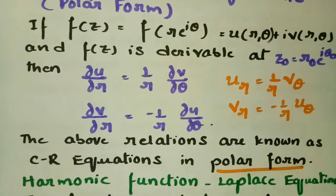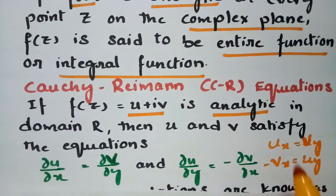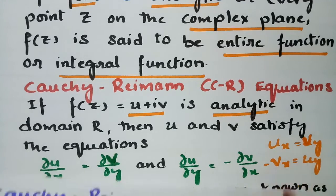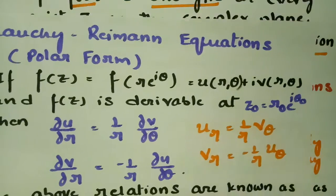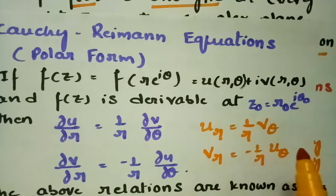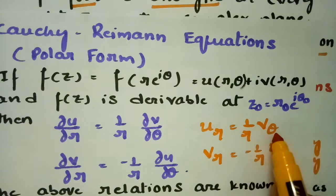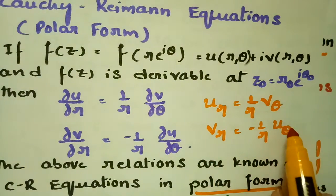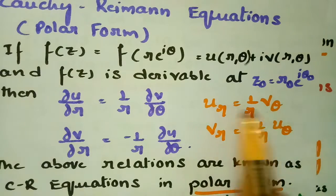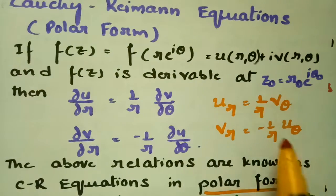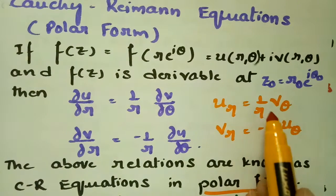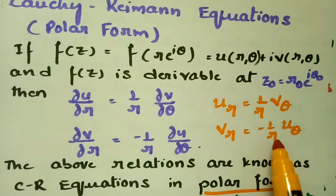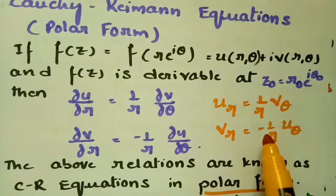There is a slight difference here. In Cartesian form: u_x = v_y and u_y = −v_x. In polar form: u_r = (1/r)·v_θ and v_r = −(1/r)·u_θ. So in polar form, r and θ appear — specifically the factor of 1/r — and the minus sign is also common to both forms.